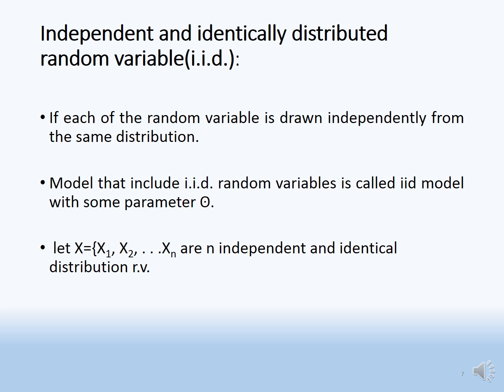Let x = {x1, x2, ..., xn} be IID random variables. Then the probability of x, which is the joint probability of x1 through xn, equals the product: P(x1) times P(x2) times P(x3) up to P(xn).